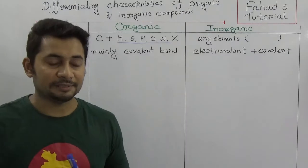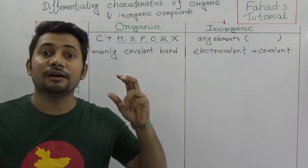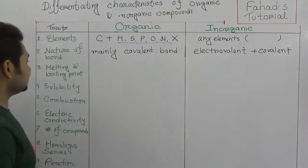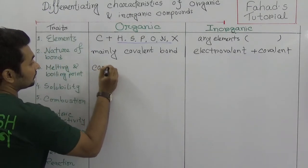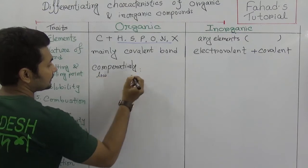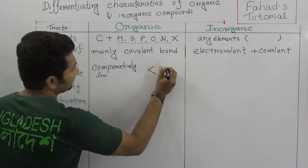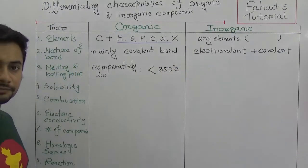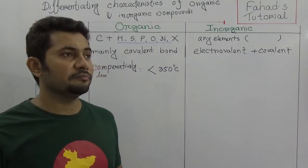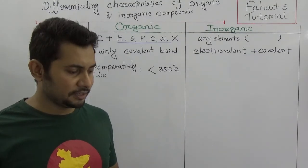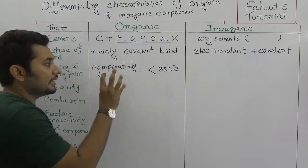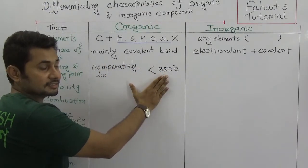Number three is melting and boiling point. The melting and boiling points of organic compounds are comparatively low compared to inorganic compounds — less than around 350 degrees Celsius. For example, the boiling point of methanol is around 62 degrees Celsius, and the melting point of benzoic acid is around 121 degrees Celsius.